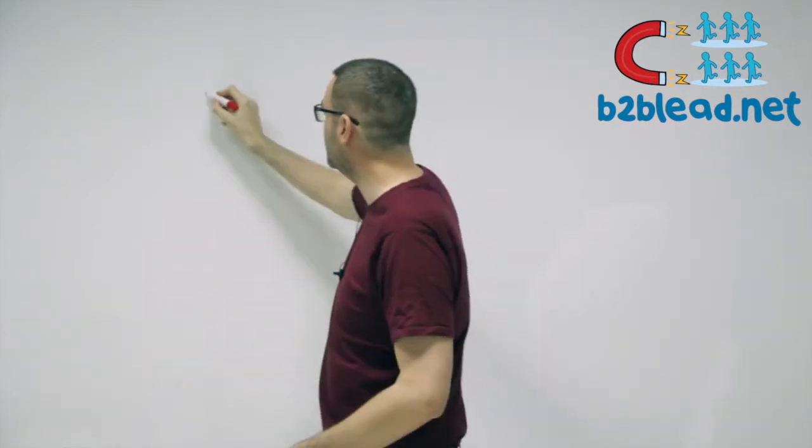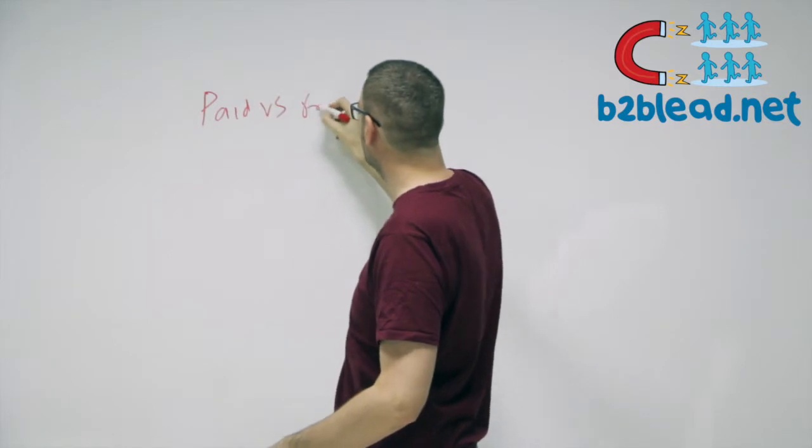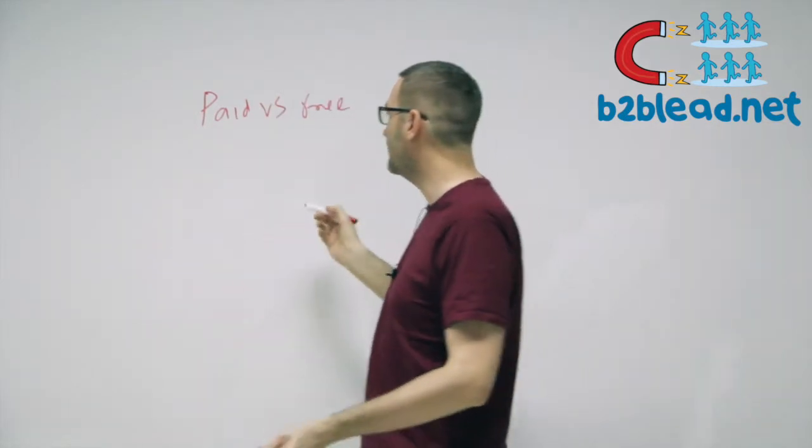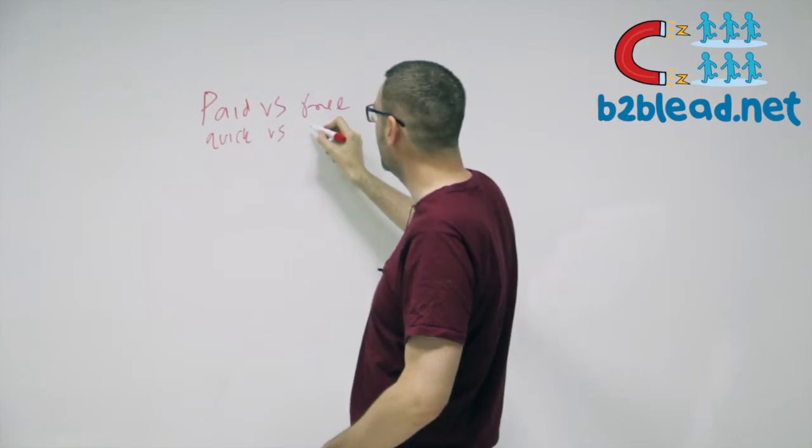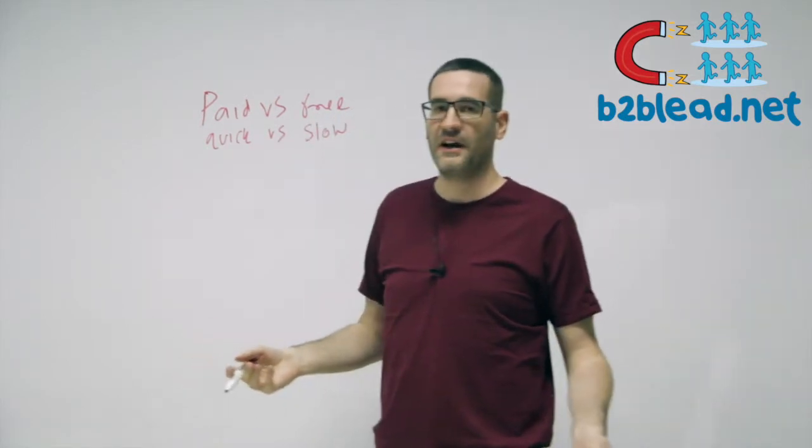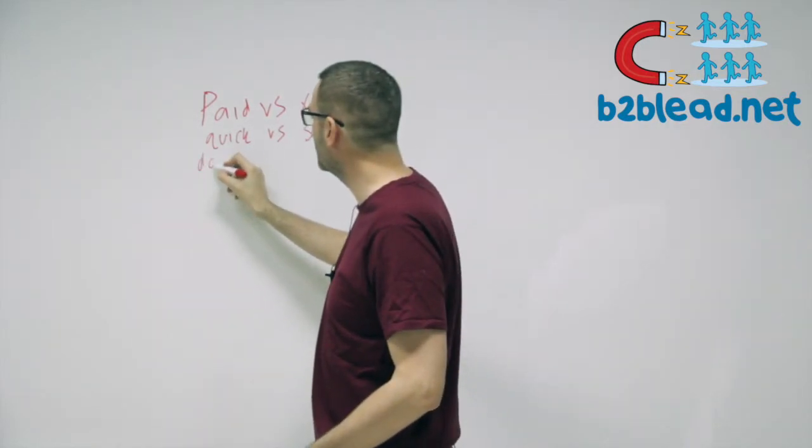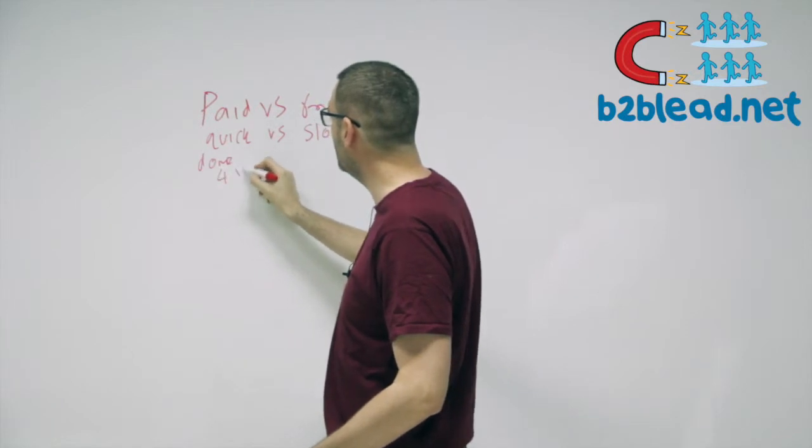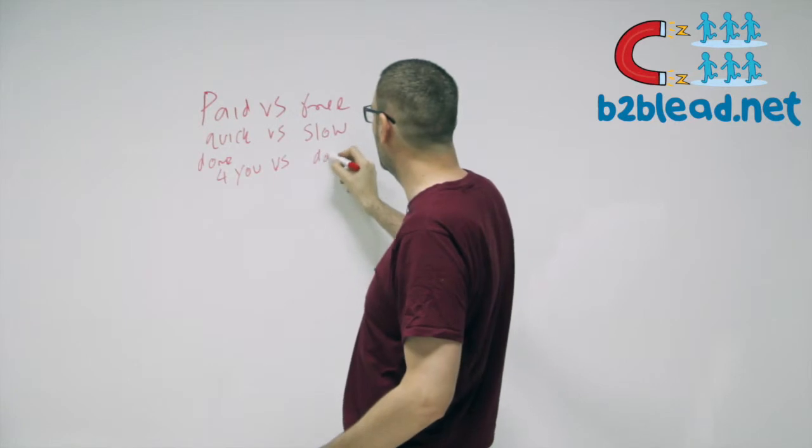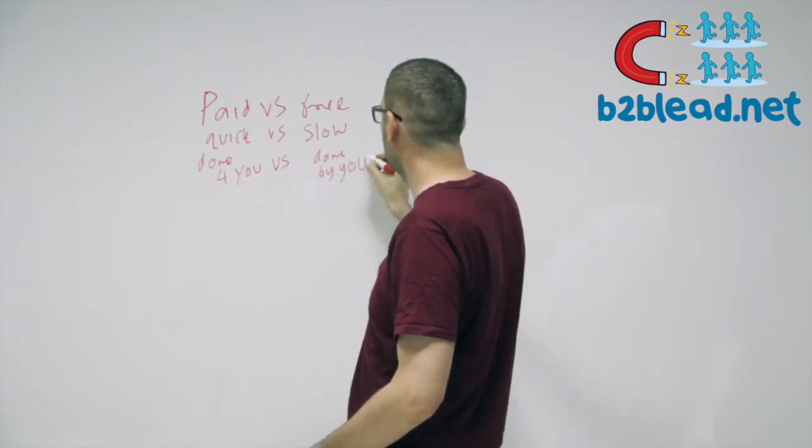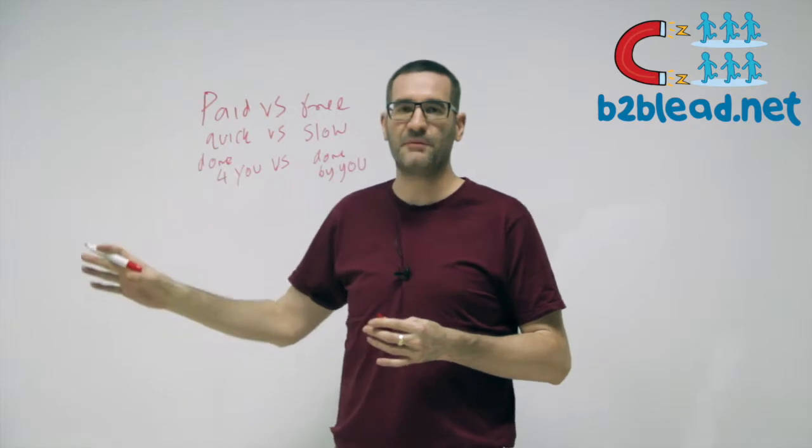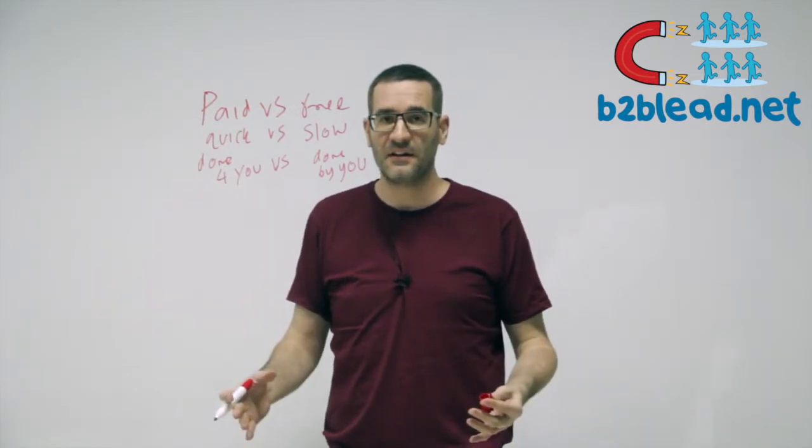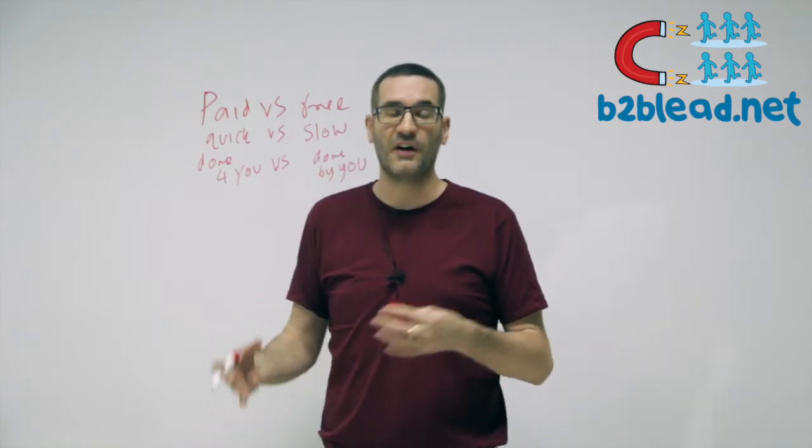You've got different types of lead generation. You've got paid versus free, which is basically quick versus slow, or done for you versus done by you. If you're doing paid advertising, you're going to get results quicker. It's going to be implemented by somebody else and you don't have to do it yourself.